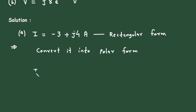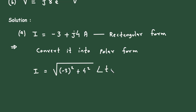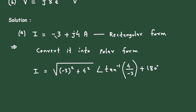So i equals the square root of x squared, that is minus 3 squared plus 4 squared, at an angle tan inverse of y by x. The value of y by x is 4 divided by minus 3. Here we can see the real part is negative, so we have to add 180 degrees, because when the real part is negative we add 180 degrees.